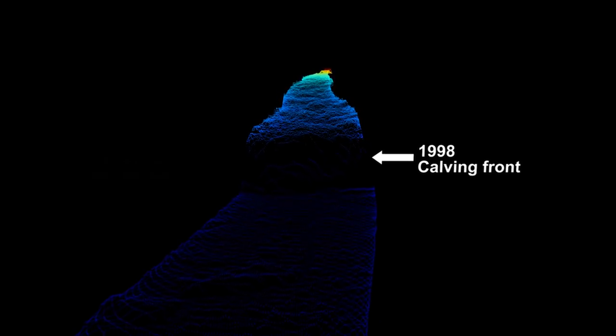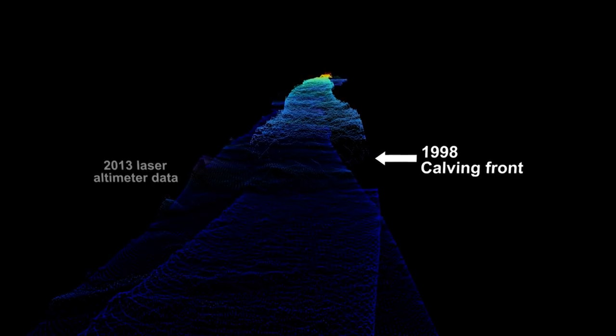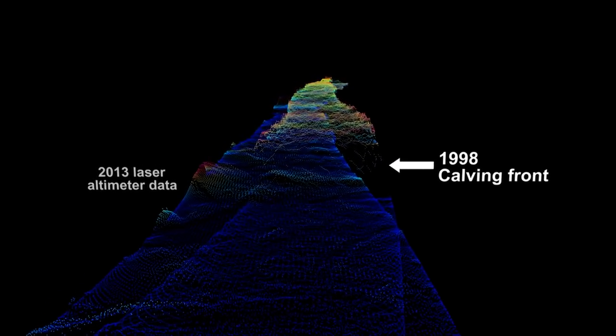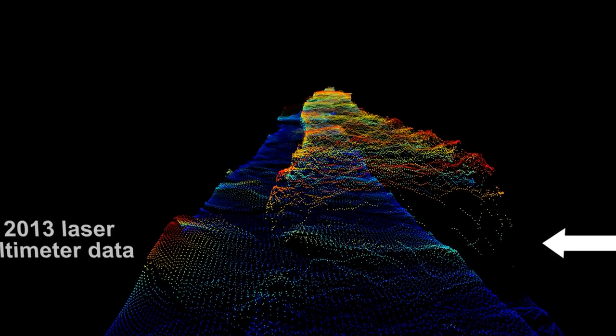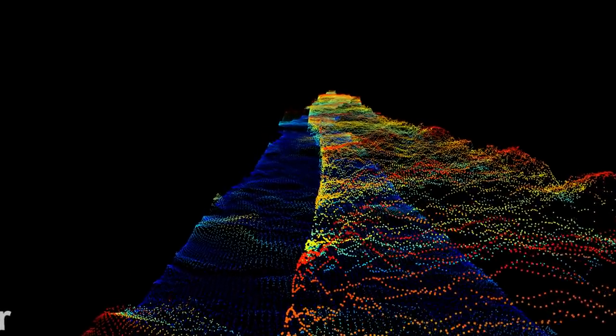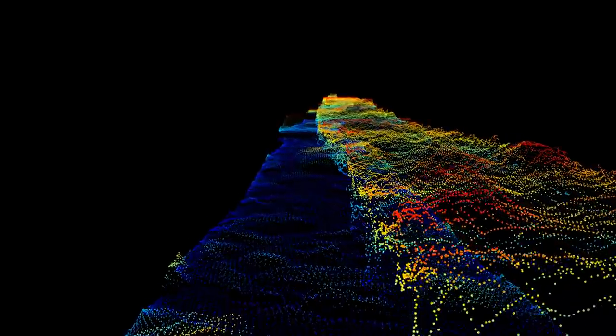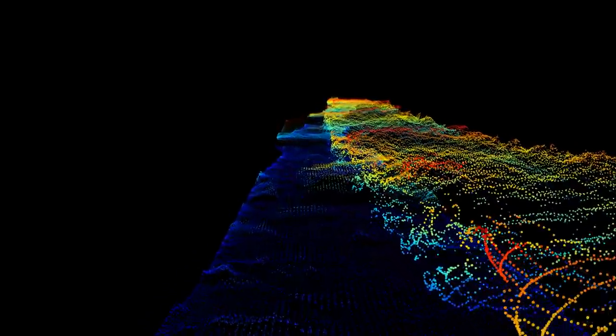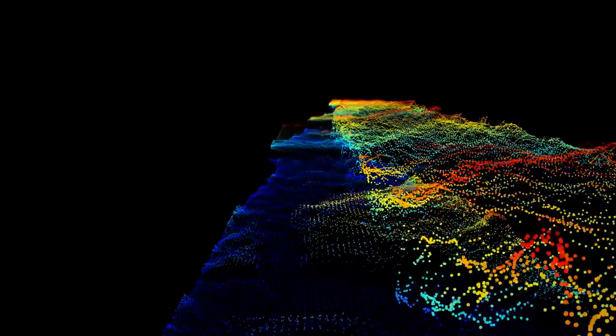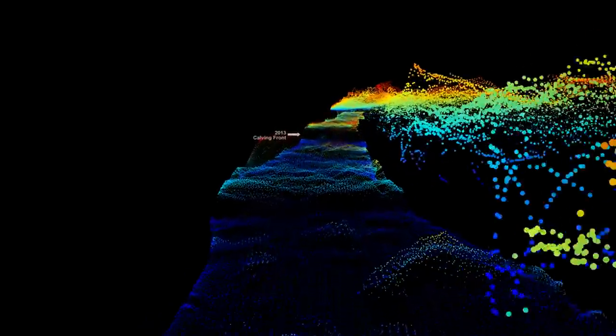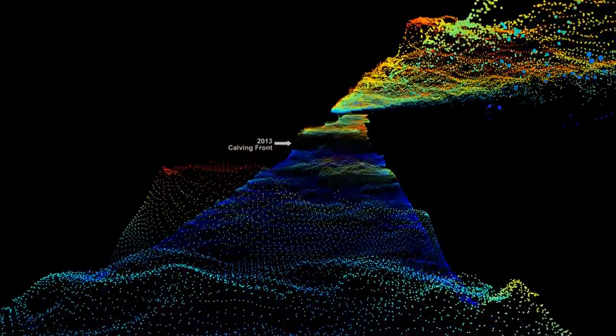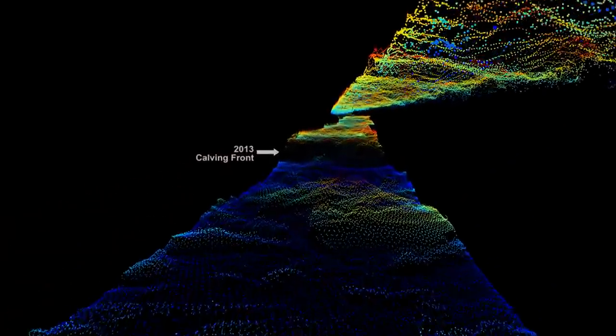But one snapshot only tells part of the story. Here's a 1998 swath compared with 2013. We've changed the color scale to highlight the local differences in elevation. We're now moving below the surface of the ice as it was in 1998, and over the melange of icebergs and ocean that was present in the same spot in 2013.